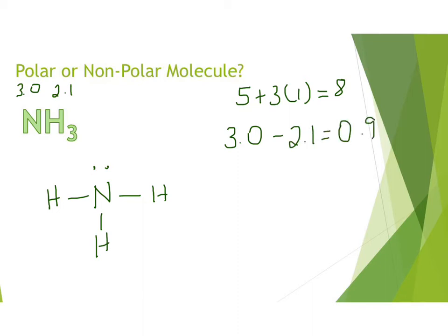That means that those bonds are polar. And when we have polar bonds, we indicate that by placing a delta negative on our more electronegative element, which is our nitrogen, and a delta positive on each of our less electronegative elements, which are our hydrogens. That is showing us that we know that those bonds are polar.